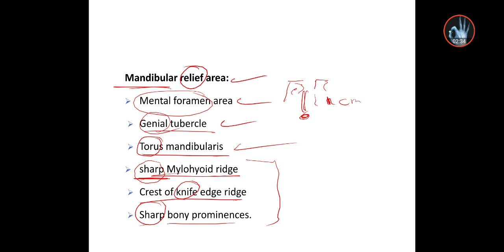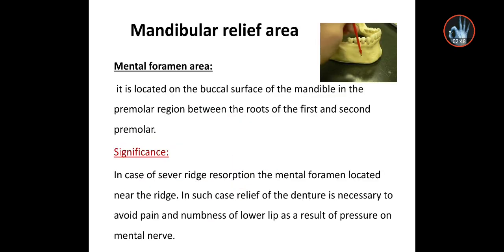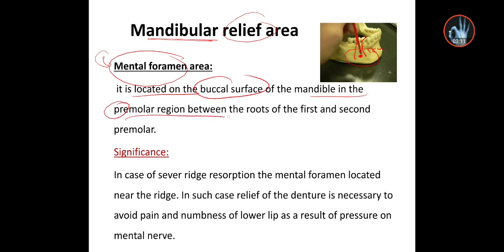All three of these are sharp and they need relief. Any sharp bony prominence requires relief. For the mandibular relieving areas: the first is the mental foramen area. This is the first premolar, the second premolar, these are the roots, and the mental foramen is one centimeter away, located on the buccal surface of the mandible in the premolar region between the roots of the first and second premolar.